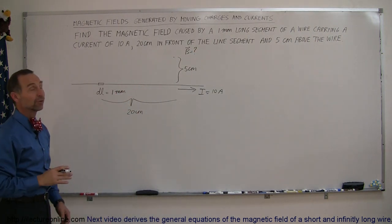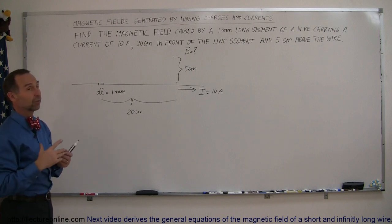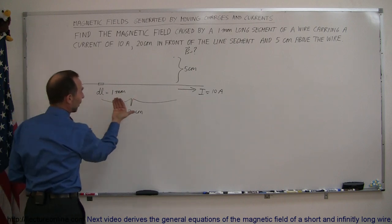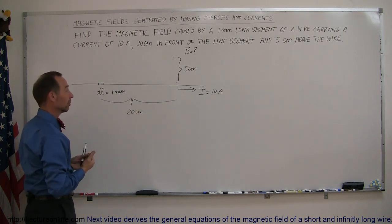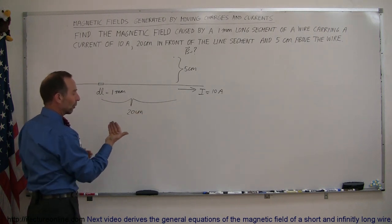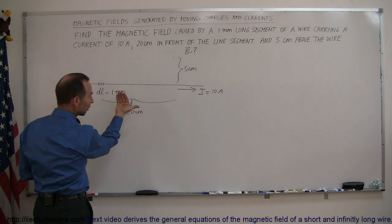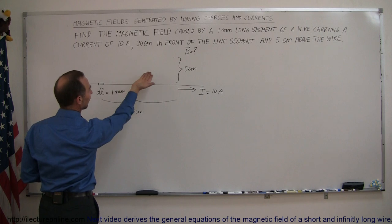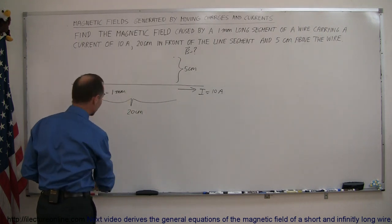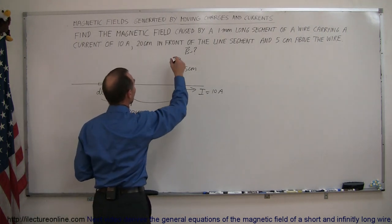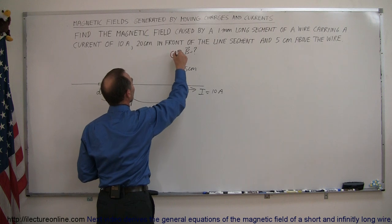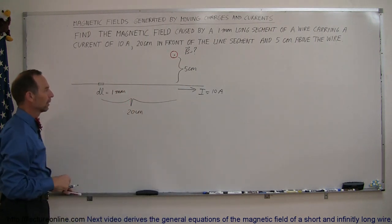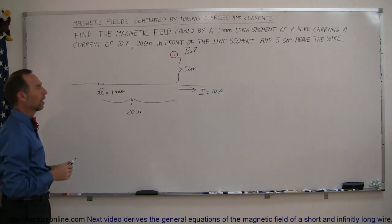The first thing we're going to do is find the direction of the magnetic field, because that's relatively easy. Since the current is moving from left to right and it's positive current, we use our right-hand rule. We point our thumb in the direction of the current and our fingers will point in the direction of the magnetic field. At that location the magnetic field is coming out of the board. We indicate that by the tip of an arrow — the magnetic field is coming out of the board.